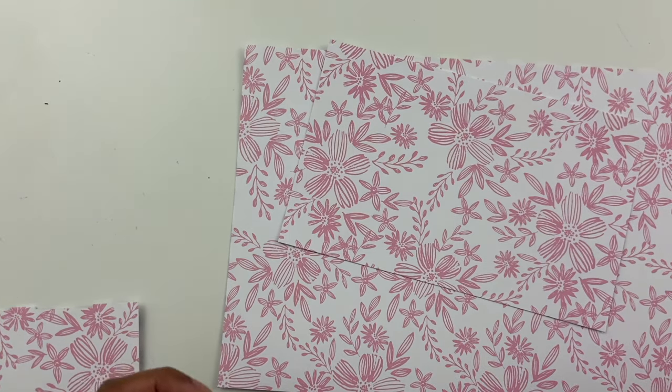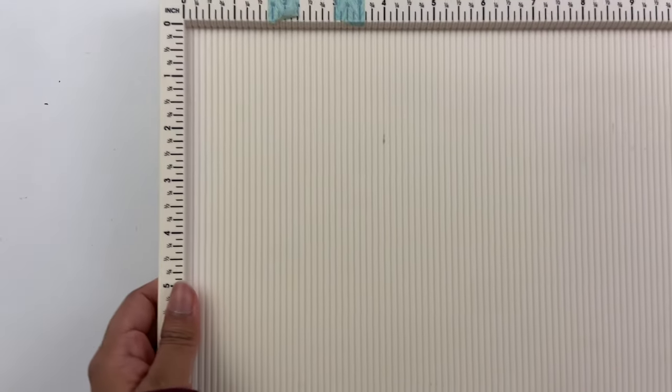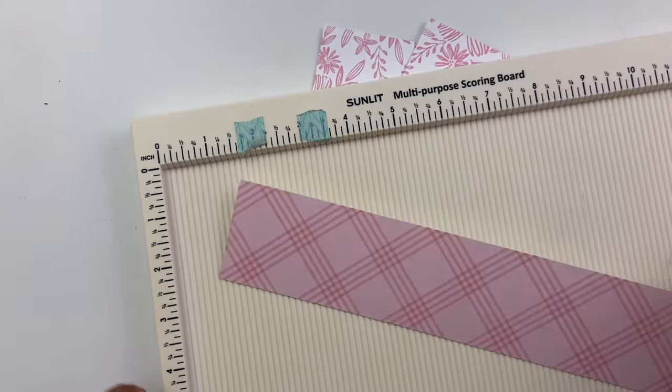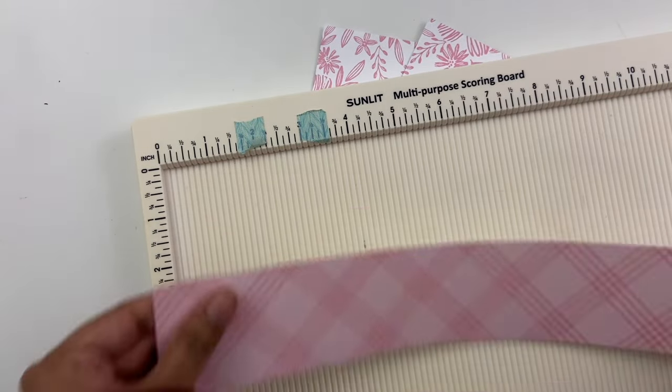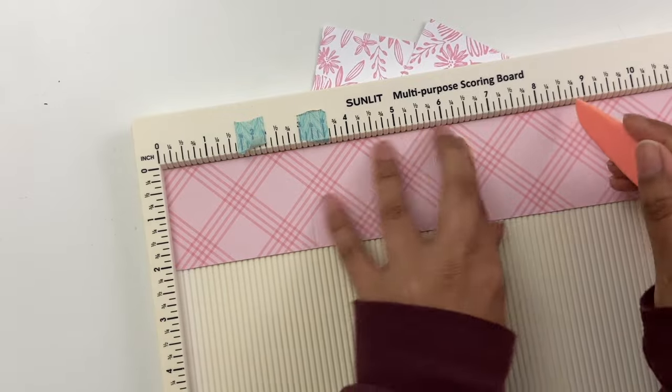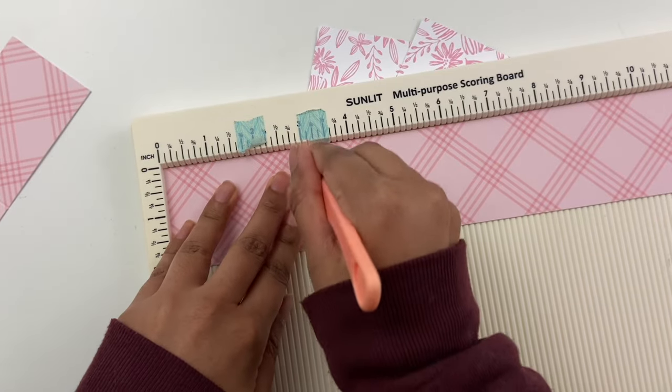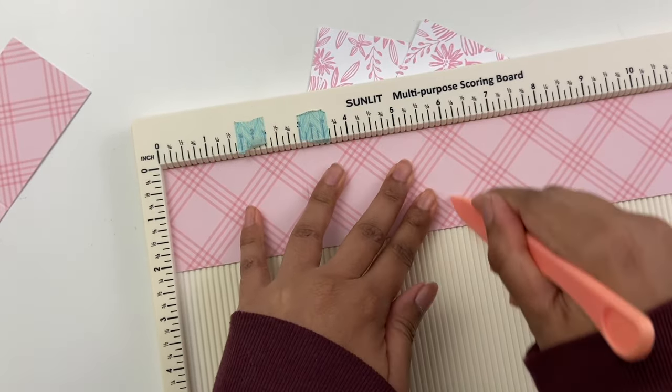Let's take out our strips and then we'll do some scoring here. Scoreboard, score tool, and these ones we're going to score every three inches. Three, six, nine and then just repeat. Three, six, nine.